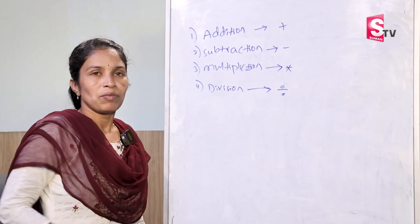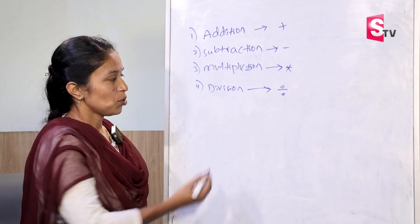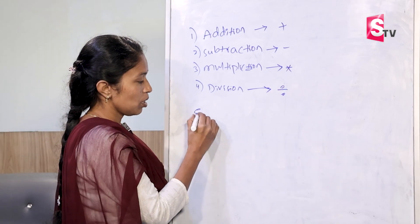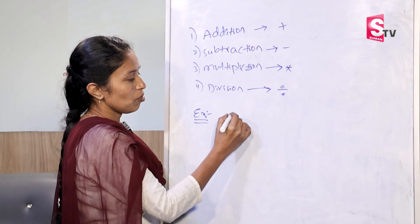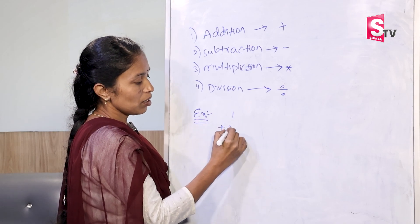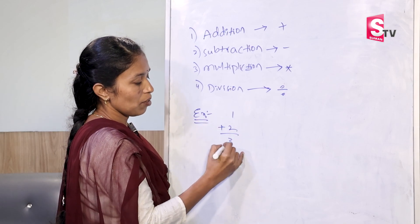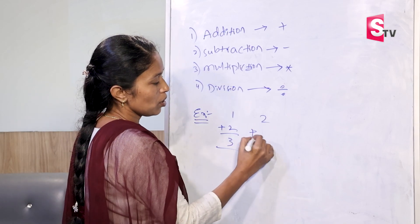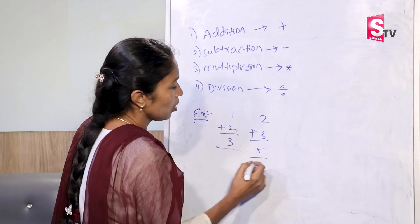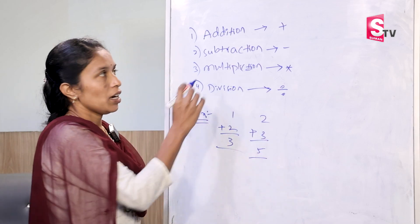Addition everyone can do. For example, 1 plus 2 is 3 — everyone can tell. 2 plus 3, how much? 5. Everyone can tell addition.